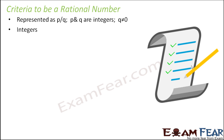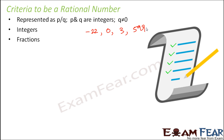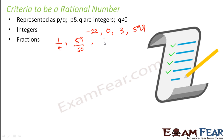Given those criteria, all integers are rational numbers. For example, -22, 0, 3, and 599 are all rational numbers. Similarly, all fractions are rational numbers — for instance, 1 by 4, 59 by 60.